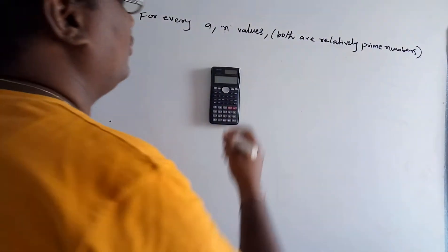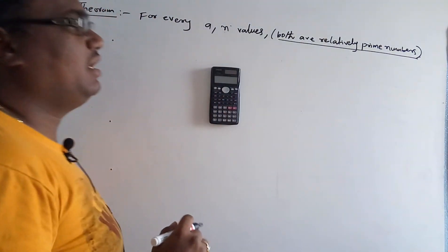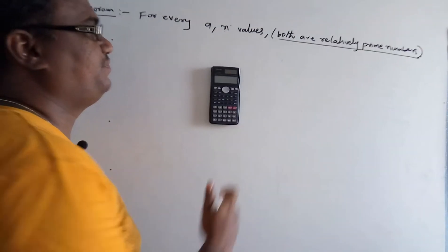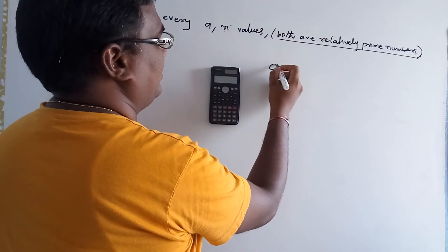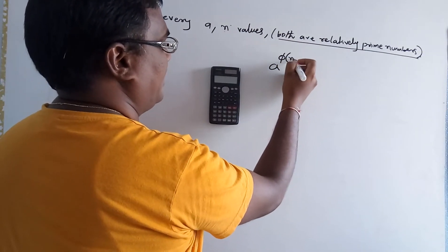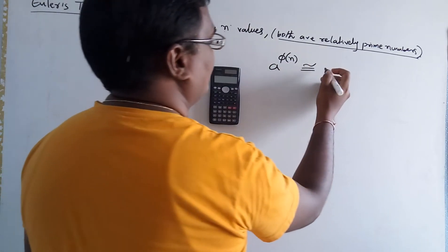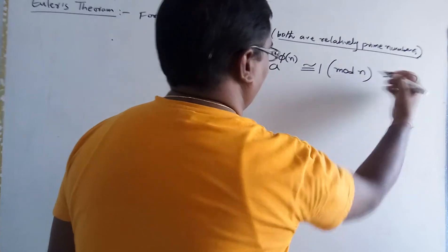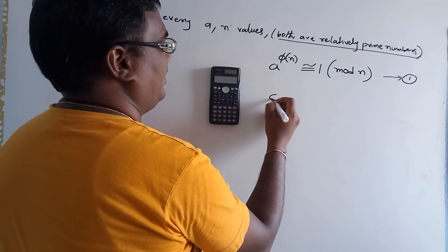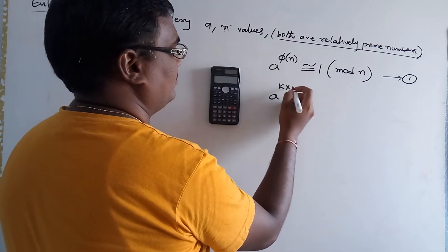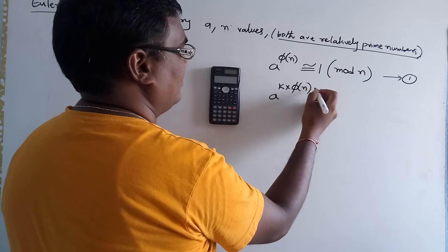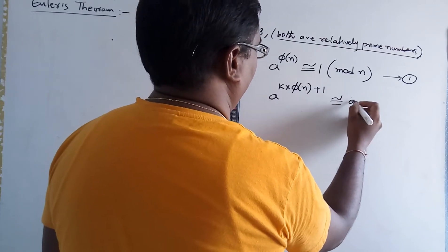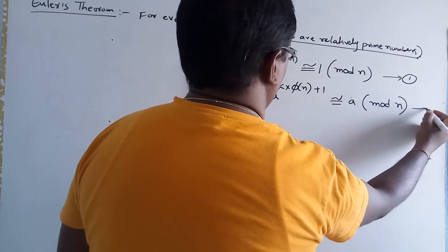First, you have to concentrate: both a and n are relatively prime numbers. In Case 1, the formula is: a^φ(n) ≡ 1 (mod n). In Case 2, the formula is: a^(k·φ(n)+1) ≡ a (mod n).